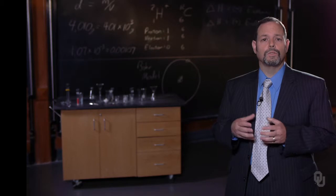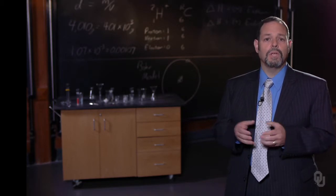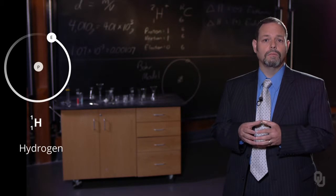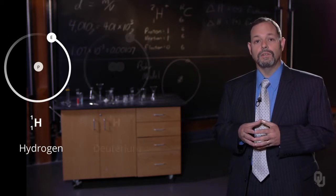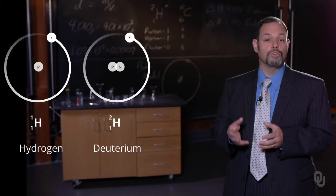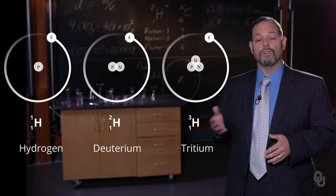If we think about neutrons, neutrons can be added to the nucleus, but changing the number of neutrons does not change the element. If we have zero neutrons in hydrogen, it is hydrogen-1, or normal hydrogen. If we have one neutron, it is hydrogen-2, or deuterium. If we have two neutrons, it is hydrogen-3, or tritium.